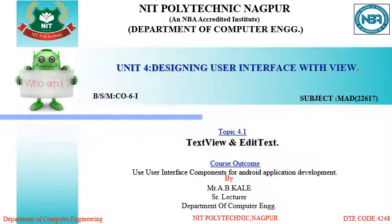Hello students, welcome to this online teaching learning process of subject mobile application development. From today we are starting our fourth unit, that is designing user interface with view. In the third unit we studied about how to use different layout structures in an activity. An activity is the user form which we design, and inside that layout structure we use different controls, or in Android they are called views. The fourth unit deals with designing user interface with different views or controls.